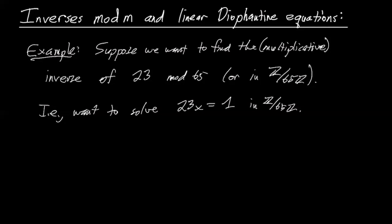And the thing is, you could just start plugging in values of x and try to find it, keep multiplying. Maybe it's 3, 23 times 3 is 69. Well, that's 4 mod 65, so that's not right. So you can keep multiplying numbers by 23, reduce mod 65, see if you get one.